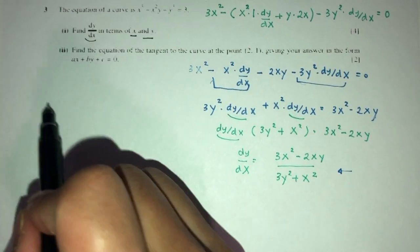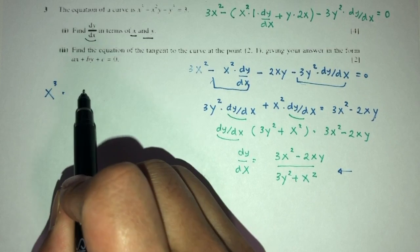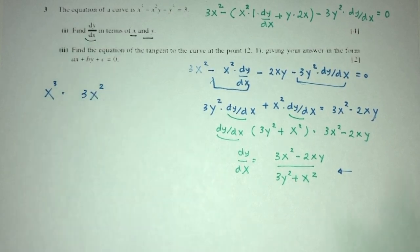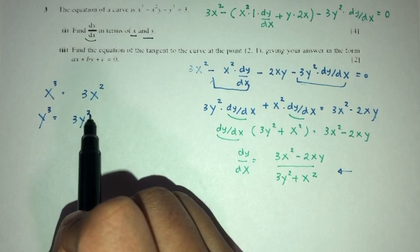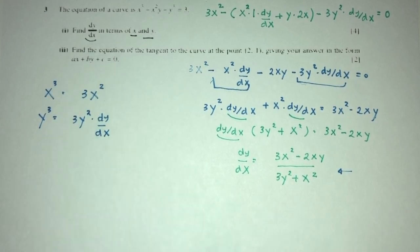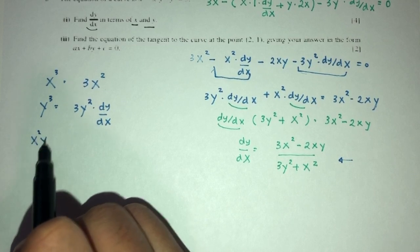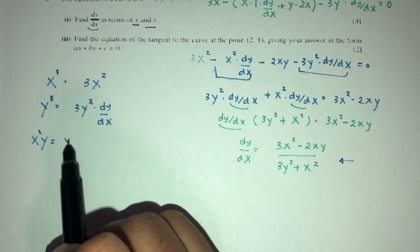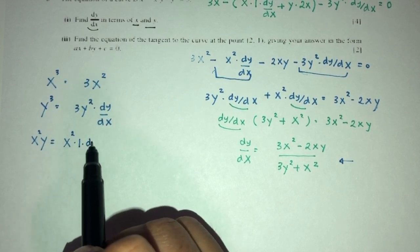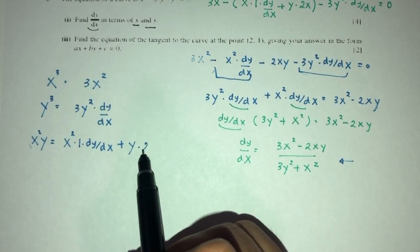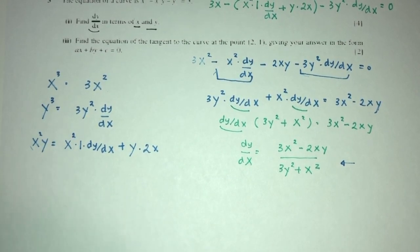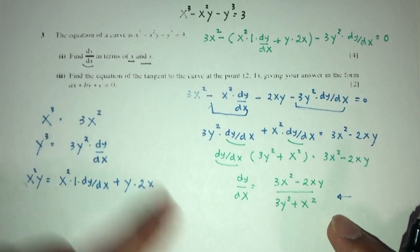One thing to clarify: when differentiating y cubed with respect to x, you get 3y squared times dy/dx. The key idea is that every time we differentiate a y term, we multiply by dy/dx at the end. For a product like x squared y, keep x squared and differentiate y to get dy/dx, then add y times 2x. That's the main idea behind implicit differentiation. So dy/dx in terms of x and y is done.